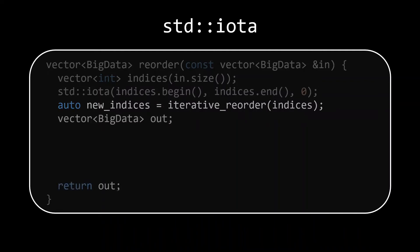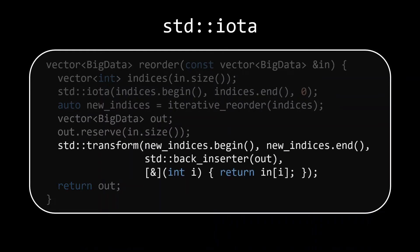Now all that's left is to create the output container. Make sure to reserve enough room in it, and copy our input elements based on the new indices. For the copying, we'll use a call to standard transform with a lambda that does the translation from indices to the elements from our input.